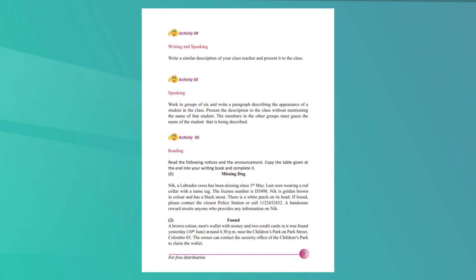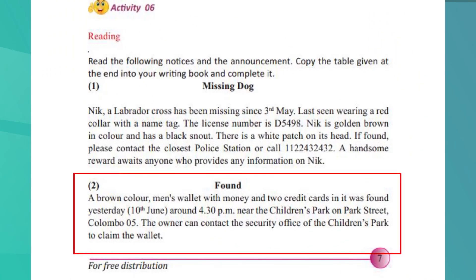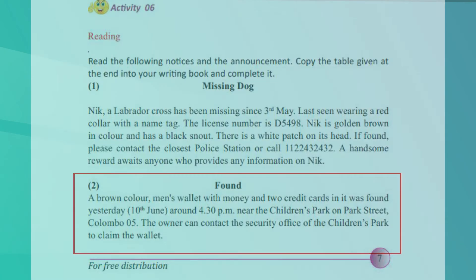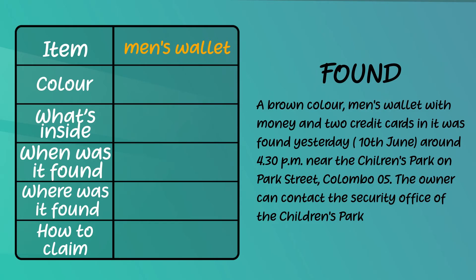Here is your notice. This notice appears on page 7 of your textbook. Now read the notice and find the required information. First you have to find the item — can you see it in the notice? Yes, it's a men's wallet. What about the second one? The second one requires you to find the colour of this wallet. Yes, the colour is brown.